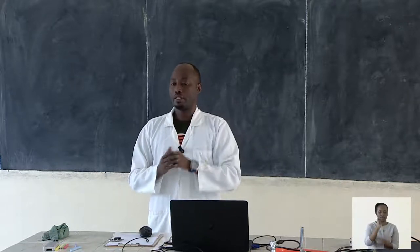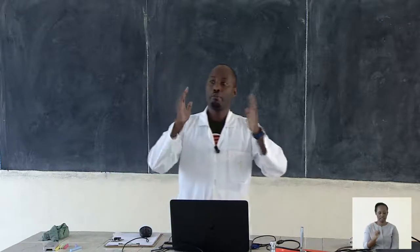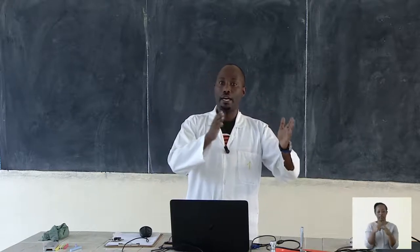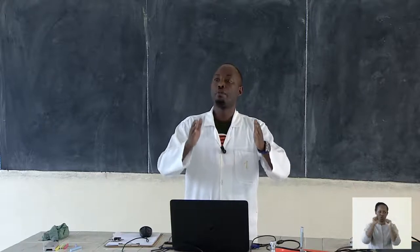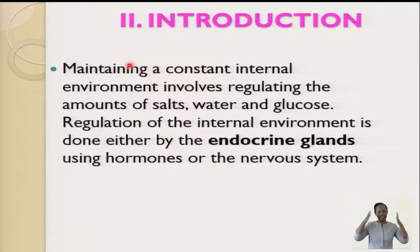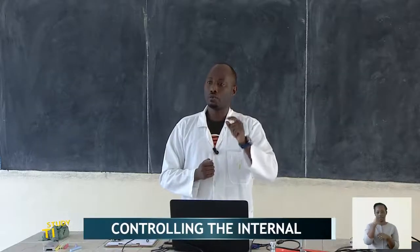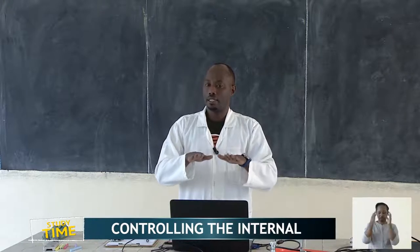We also have the nervous system — the brain and the spinal cord. The endocrine system and the nervous system are the two systems that play a big role in homeostasis, in maintaining the internal environment. The word homeostasis comes from two Greek words: 'homeo,' which means similar, and 'stasis,' which means at a standstill — you keep something balanced at a standstill.